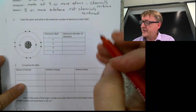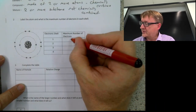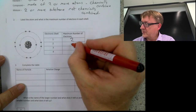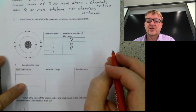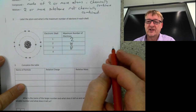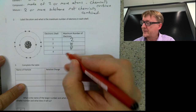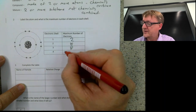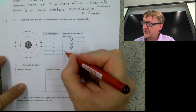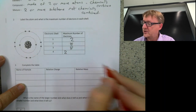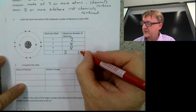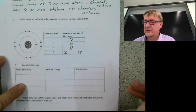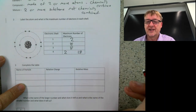Electron shells — maximum number of shells: 2, 8, 8. For the purpose of this, you're only ever going to have to draw up to calcium, which is 2, 8, 8, 2. But actually, the maximum you can have in the fourth shell is 18.